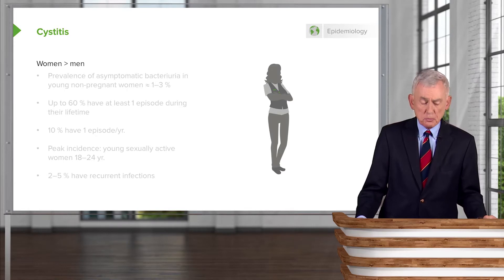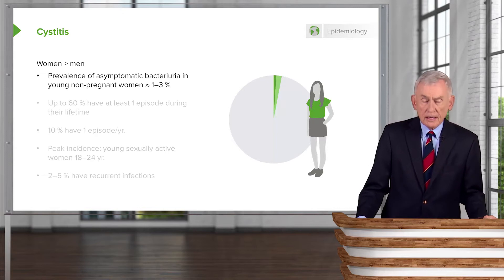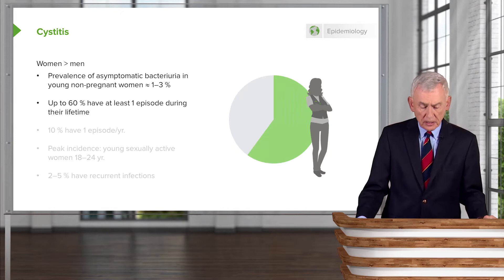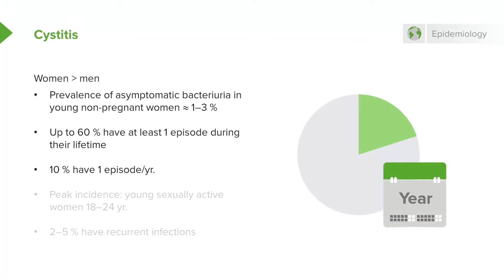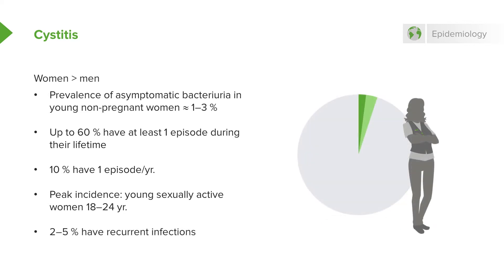It's a disease that's much more common in women than men. Women have an incidence of asymptomatic bacteriuria of around 1-3%. Up to 60% of women have had at least one episode of cystitis during their lifetime, and 10% have it once a year. The peak incidence is among young, sexually active women 18-24 years of age, and 2-5% have recurrent problems with cystitis.